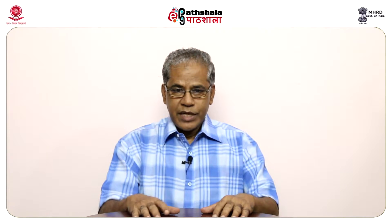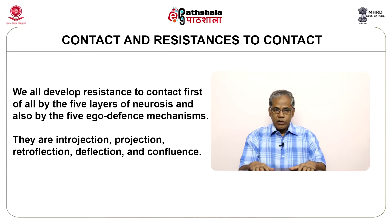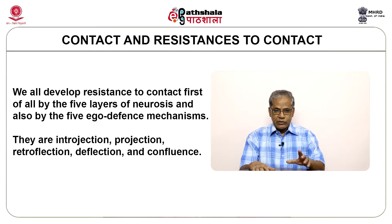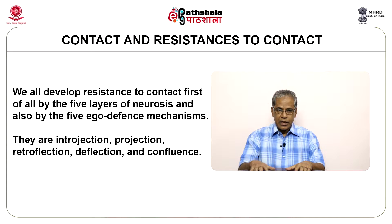The next concept is contact and resistances to contact. Effective contact means interacting with nature and with others without losing one's sense of individuality. Contact is the lifeblood of growth. We all develop resistance to contact first by the five layers of neurosis and also by the five ego defense mechanisms: introjection, projection, retroflexion, deflection and confluence.